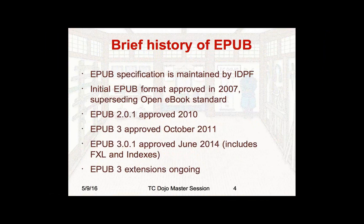EPUB has been around for quite a while. The initial EPUB spec was approved in 2007, but that replaced an older standard that had been around since 1997. You'll find that many of the EPUBs out there now are the EPUB 2 format. EPUB 3.0.1 is the current spec, approved in June of 2014. There is a lot of active work being done on the EPUB spec by the organization that maintains it, IDPF — the International Digital Publishing Forum.